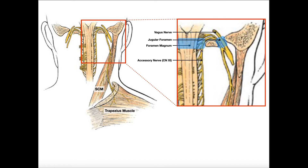It turns out the spinal accessory nerve actually ascends up through the foramen magnum. After it ascends, it just simply turns around and then descends out of the cranium through the jugular foramen. It's not the only cranial nerve that descends through the jugular foramen — it also travels with the vagus nerve (cranial nerve 10) and the glossopharyngeal nerve (cranial nerve 9). So there are actually three nerves that move down through this jugular foramen: cranial nerve 9, cranial nerve 10, and cranial nerve 11, the spinal accessory nerve.